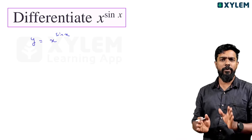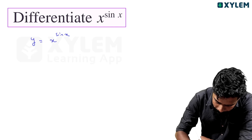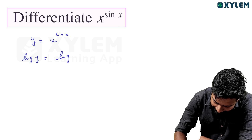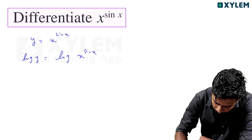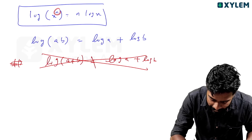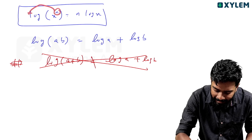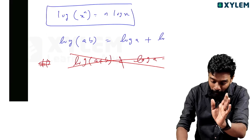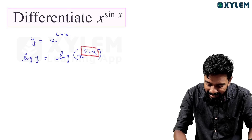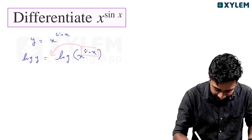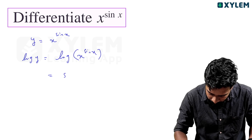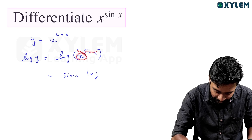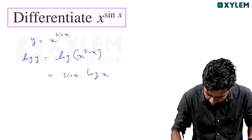For x raise to sin x, log applies. So log y equals log x raise to sin x. Using the log power rule, the power sin x comes down: log y equals sin x into log x.